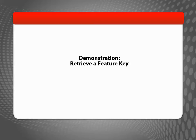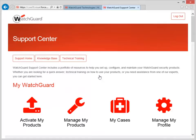If your Firebox isn't connected to the Internet, you can manually retrieve the Feature Key from your WatchGuard account and then install it yourself. To get a copy of your Feature Key, log in to the WatchGuard Support Center and navigate to the My Products page.